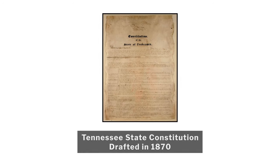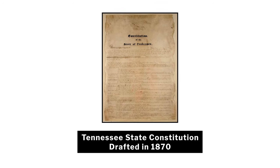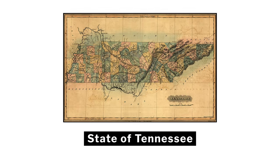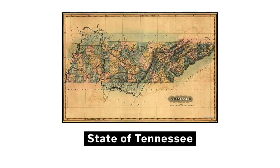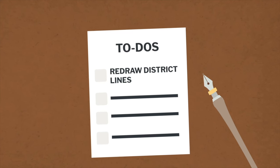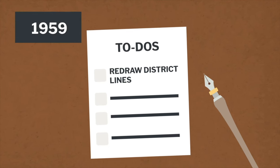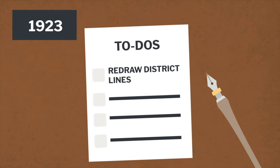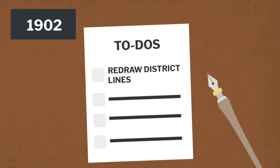The Tennessee state constitution required that legislative districts for the Tennessee State Assembly be redrawn following the federal census administered every 10 years based upon population change. The problem was that it was 1959 and Tennessee had not redistricted since 1901.